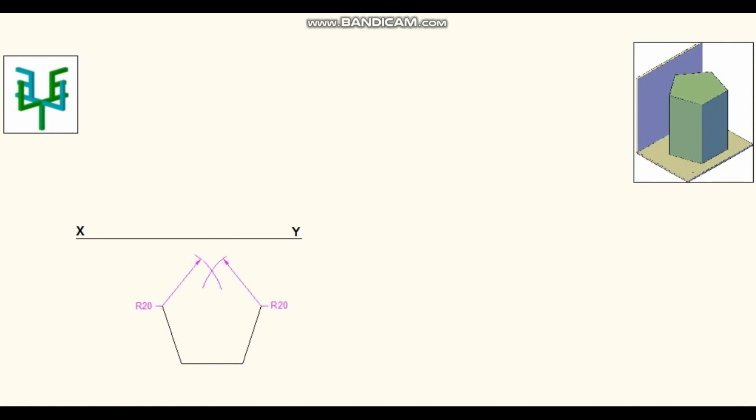Name the corners with numbers. Since a prism has two bases, the top base corners can be named with alphabets. Project all these corners above the XY line. Edges 1A, 2B, 3C and 4D are visible, whereas edge 5E is invisible.